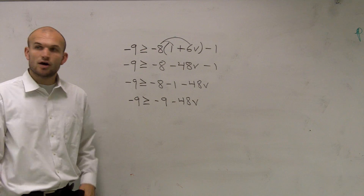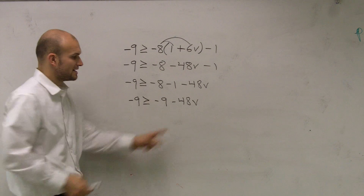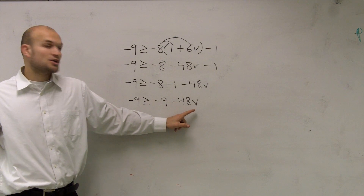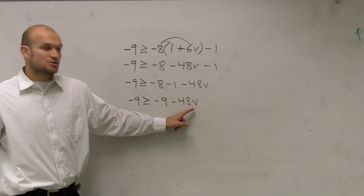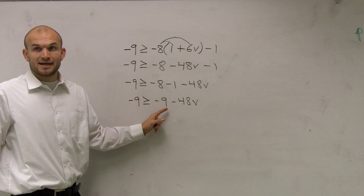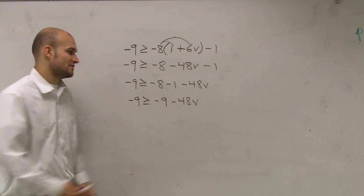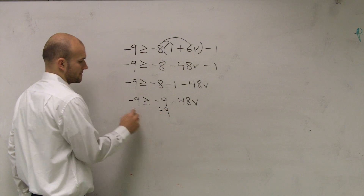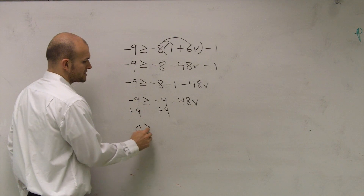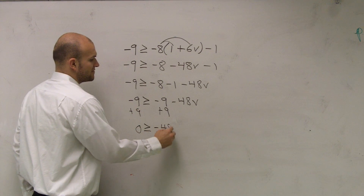So now we can solve our two-step equation. I need to undo what's happening to my variable — fully undo what's addition or subtraction first. That's a negative 9, so 9 is being subtracted, so I need to add 9. And I get 0 is greater than or equal to negative 48b.